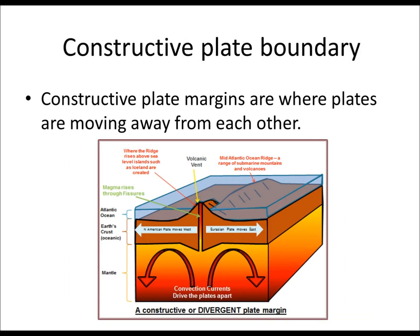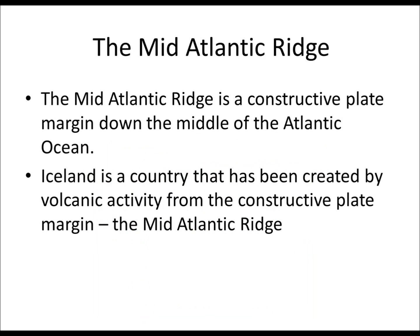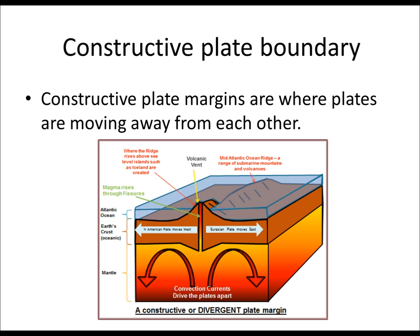The first type is a constructive plate boundary. This is a plate margin where the plates are moving away from each other. An example of this is the Mid-Atlantic Ridge, a constructive plate margin down the middle of the Atlantic Ocean. Iceland is a country that has been created by volcanic activity from this constructive plate margin. Going back to the diagram, magma is pushed up in the gap between the two plates, comes to the surface, cools, and eventually rises above sea level to form islands like Iceland.